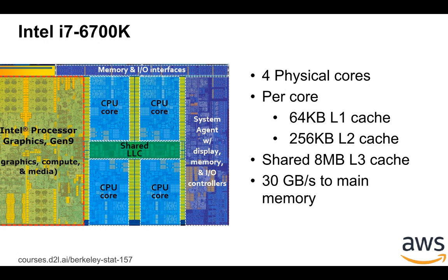On the right-hand side you can see the blue area — we have four CPU cores. These are physical CPU cores, and between them there's a shared last-level cache called L3 cache. Within each physical CPU, we have 64 kilobyte L1 cache and 256 kilobyte L2 cache. The shared L3 cache is 8 megabytes. The blue area on the right and on the top is the interface to main memory, providing 30 gigabytes per second bandwidth to main memory.